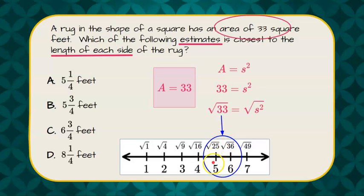So it's going to be 5 and something. So I notice that I have two choices, 5 and a quarter or 5 and 3 quarters. So now I need to identify if the square root of 33 is closer to the square root of 25 or closer to the square root of 36.